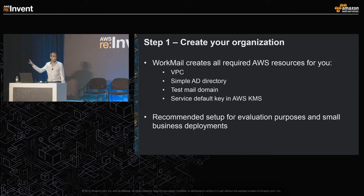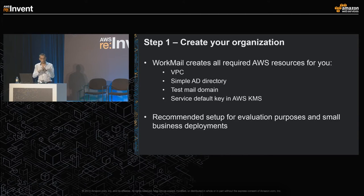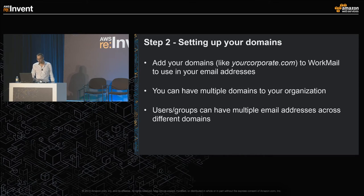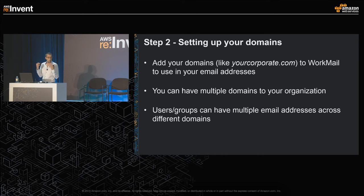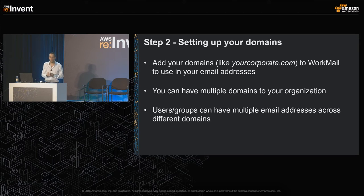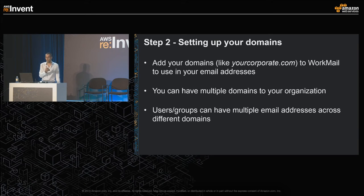Once all resources are created in your AWS account, you can start creating users and accessing the WorkMail service. The quick setup is really for smaller organizations of around 25 users who do full management through the AWS console, and also for people who want to try out the service. The next step is adding your corporate domains to Amazon WorkMail — per organization you can add up to 100 domains, allowing you to use multiple domains and assign multiple addresses to users and groups.